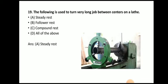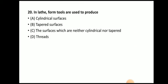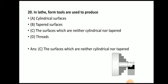Next question: in lathe, form tools are used to produce what? The answer is surfaces which are neither cylindrical nor tapered. Form tools are used to produce surfaces which are neither cylindrical nor tapered — here you can see a job that is not cylindrical and not tapered, and at that time form tools can be used.